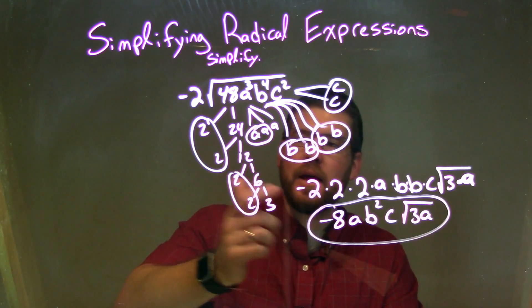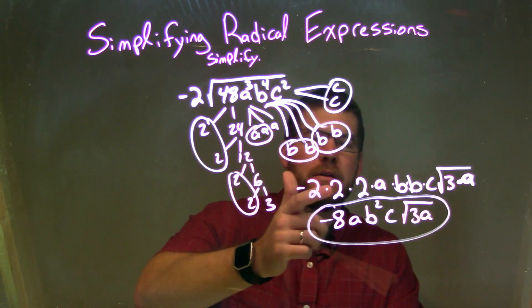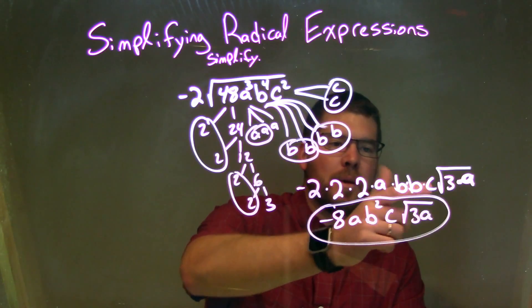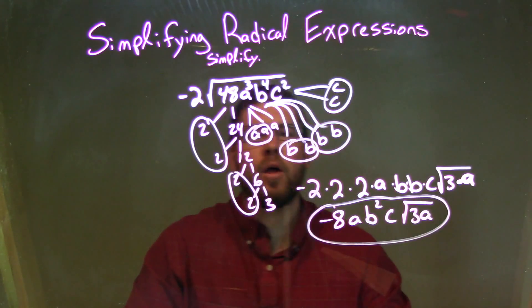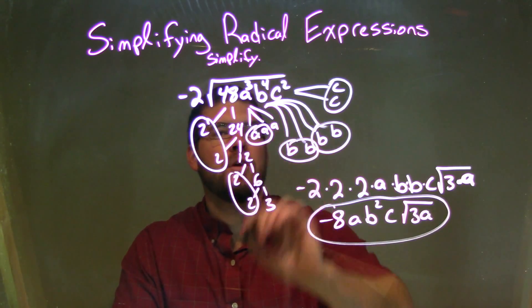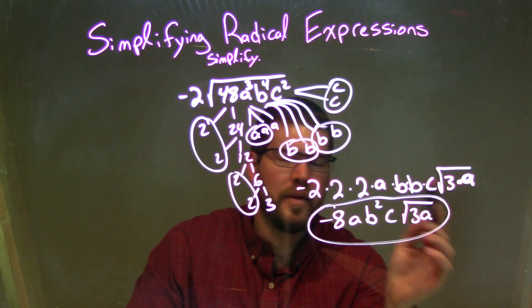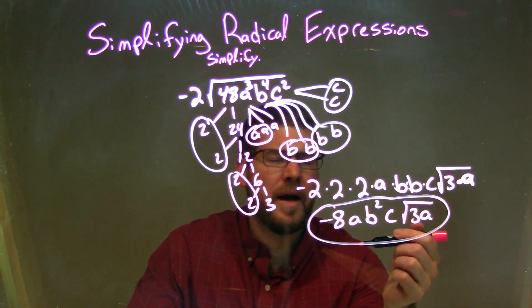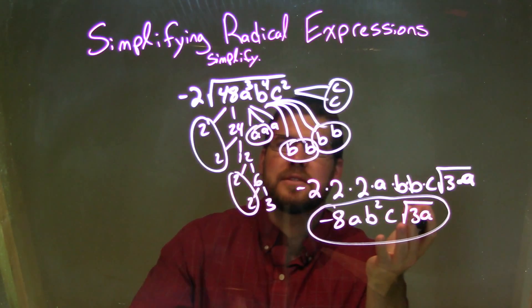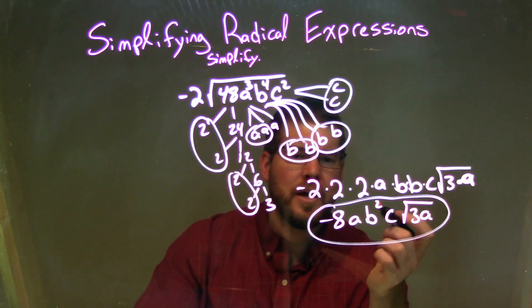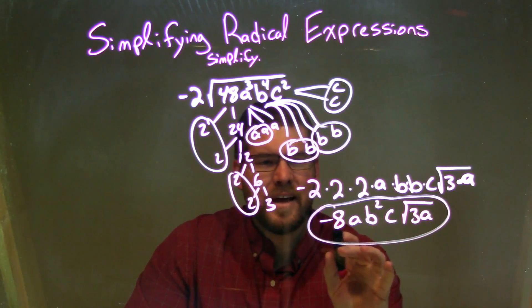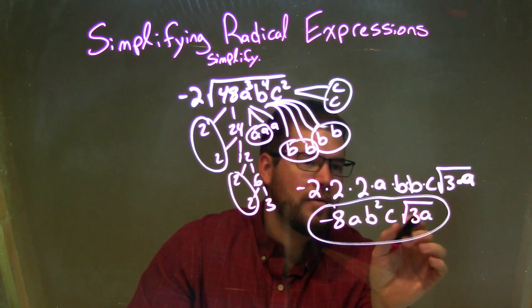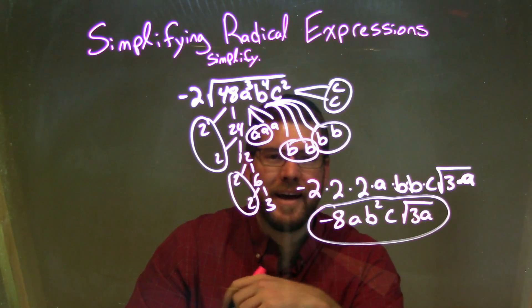So we brought down the negative 2, then multiply that by 2 times 2 times a times b times b times c, and all the singles that were left over are sitting inside the square root, which is just 3a. We simplified that, and our final answer is negative 8ab squared c times the square root of 3a.